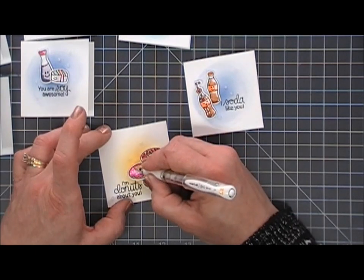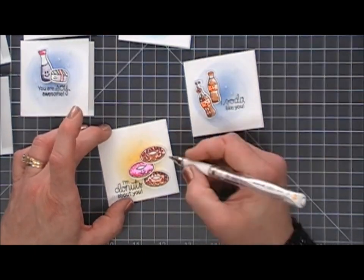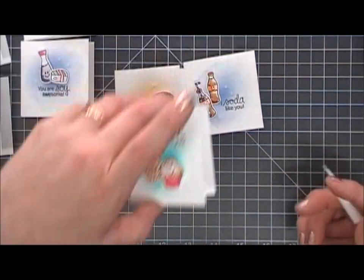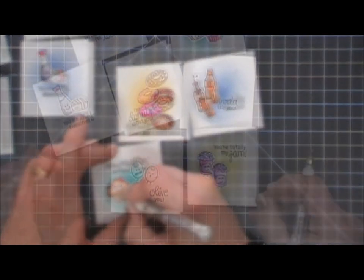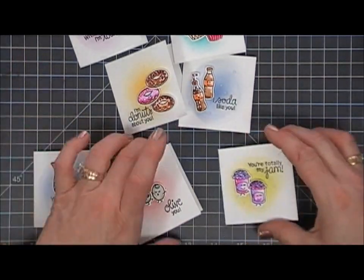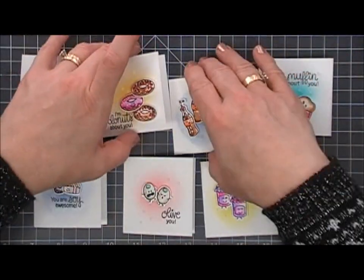Those are my little lunchbox note cards. Now that's my little buddy walking across, you can barely see her, but she's walking across. But I hope this gives you some ideas on how to use a cute little food stamp set.